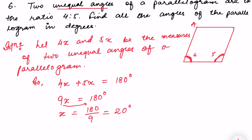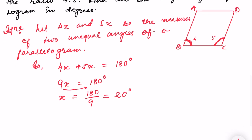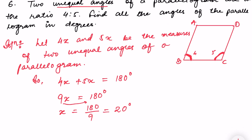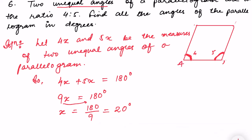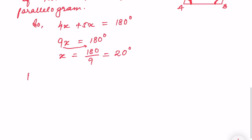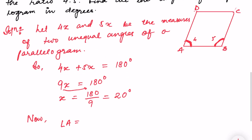Now I will name the angles of the parallelogram as A, B, C, and D. So let me label: this corner is A, this is B, this is C, and this is D.